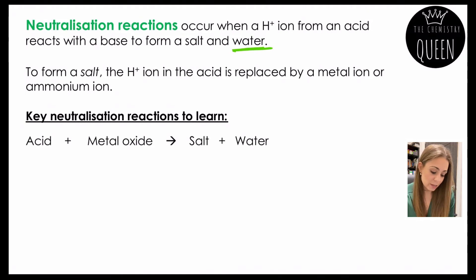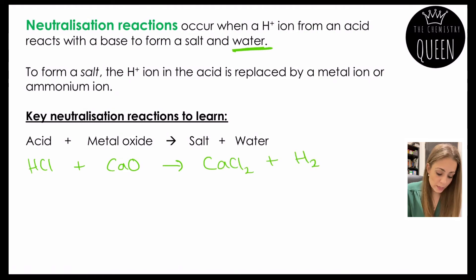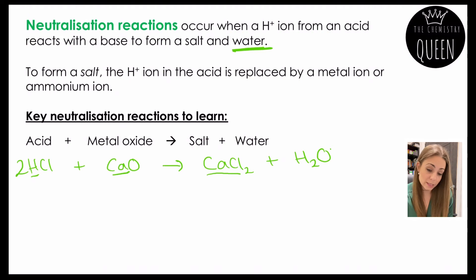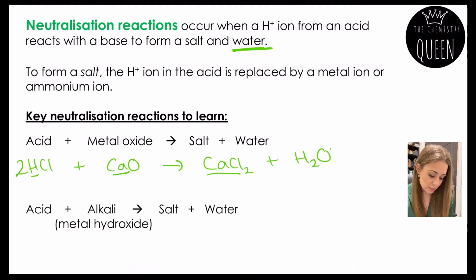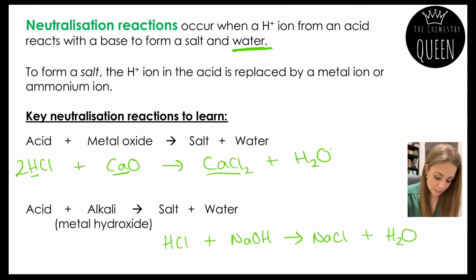Key neutralisation reactions to learn: acid plus a metal oxide makes a salt and water. For example, hydrochloric acid plus calcium oxide makes calcium chloride plus water — the hydrogen swaps with the metal ion in the base to form the salt. Another reaction is acid plus an alkali, or metal hydroxide, making a salt and water. For example, hydrochloric acid plus NaOH makes sodium chloride plus water — again the hydrogen ion has swapped with the metal ion to form the salt sodium chloride.